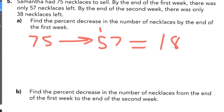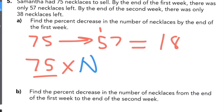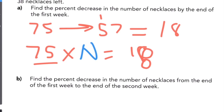So if she started with 75, we multiply it by the unknown percent decrease — that's what we need to figure out — so I'll put the variable, and it's going to equal 18. You need to solve for the variable.